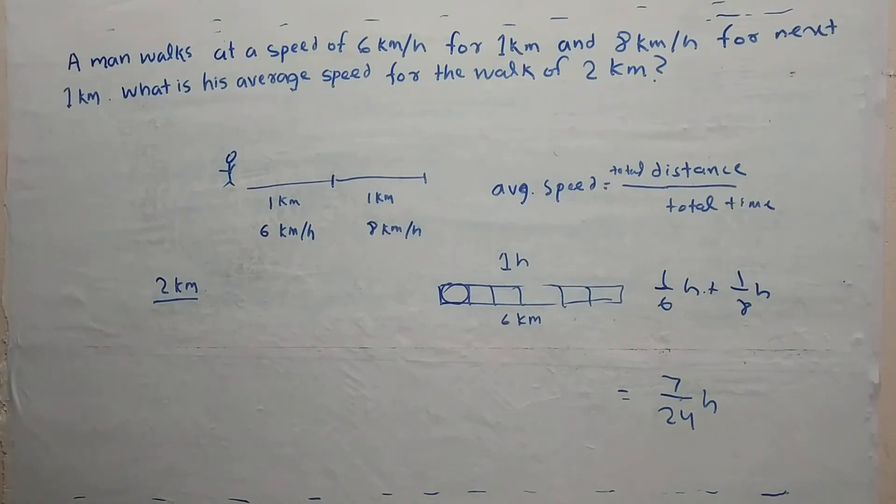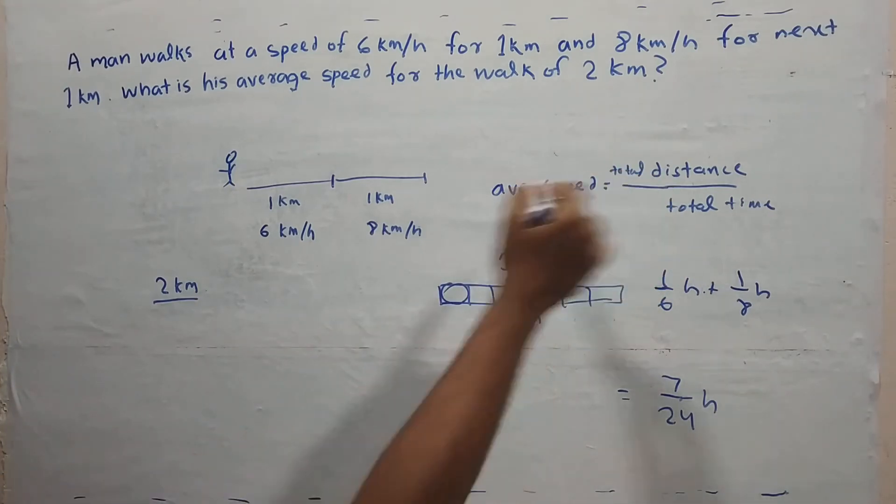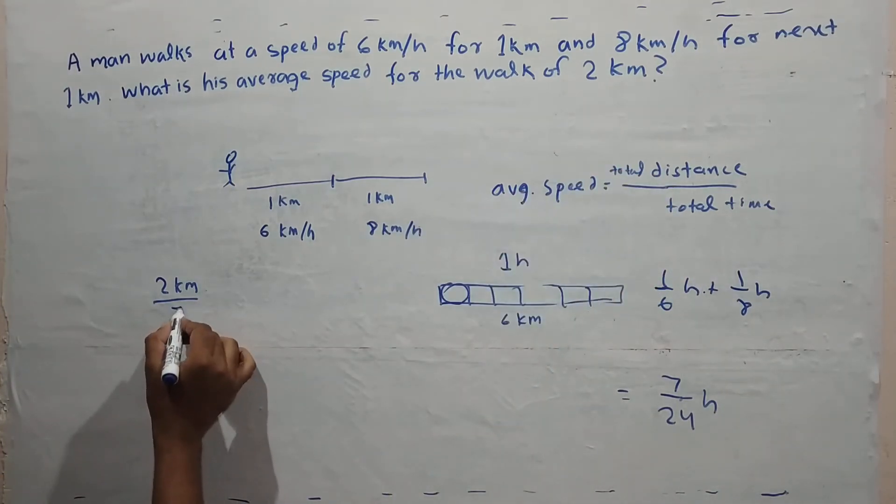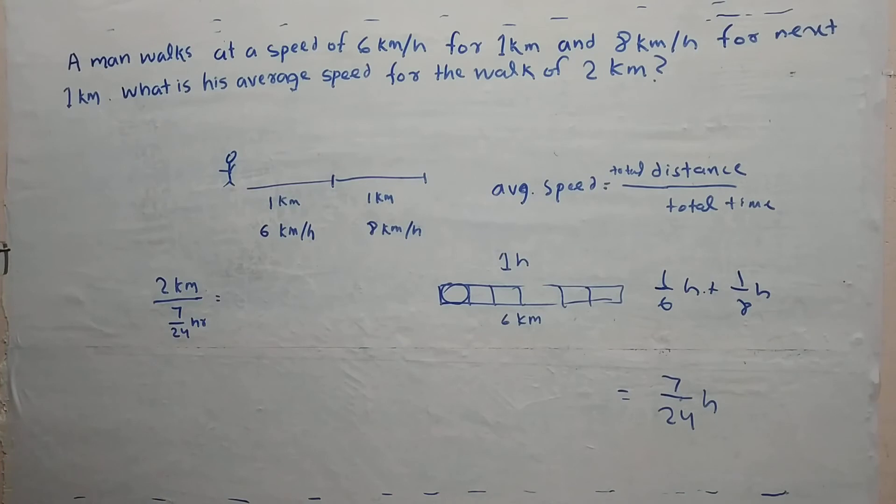So, total distance divided by total time: 2 km divided by 7/24 hour.